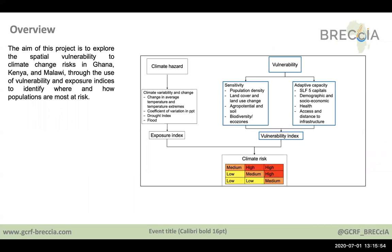The aim of this project is to explore spatial vulnerability to climate change risk with the use of vulnerability and exposure indices to identify where and how populations are most at risk, and also identify the spatial distribution and patterns of vulnerability. This is based on the IPCC risk framework, and this SOP is particularly focused on vulnerability and the sensitivity and adaptive capacity components that make up vulnerability, and also the variables which we will quantify in the vulnerability index.